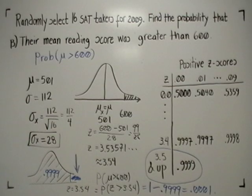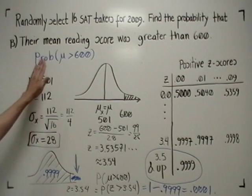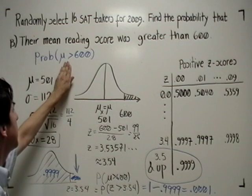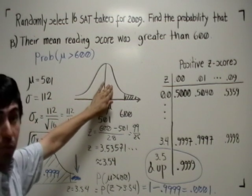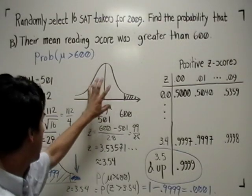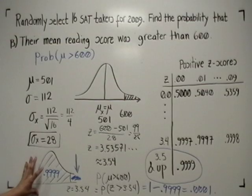So let's see what we obtained. We wanted the probability that mu is greater than 600. Mu is in a normal distribution, the distribution of the means. I convert that distribution into a standardized normal distribution.